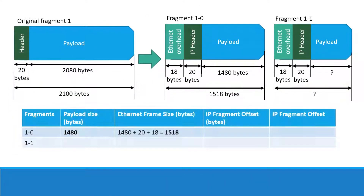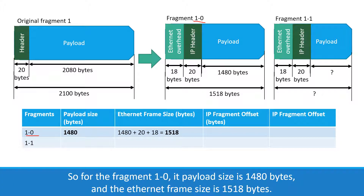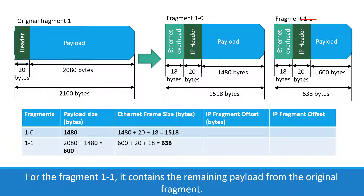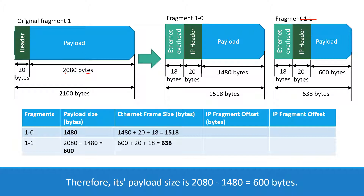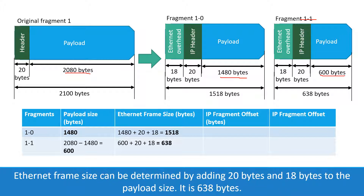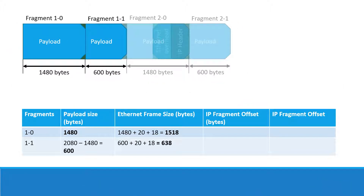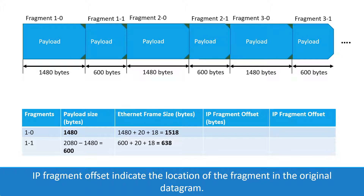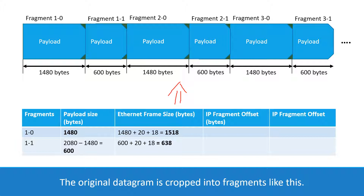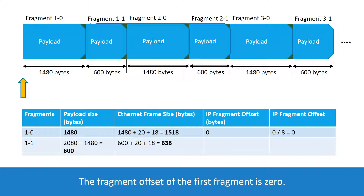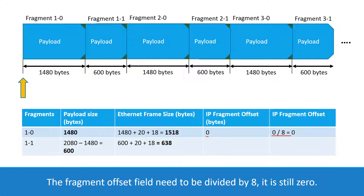For fragment 1.0, the payload size is 1480 bytes and the Ethernet frame size is 1518 bytes. For fragment 1.1, it contains the remaining payload from the original fragment. Its payload size is 2080 minus 1480 equals 600 bytes. The Ethernet frame size is determined by adding 20 bytes and 18 bytes to the payload, giving 638 bytes. The IP fragment offset indicates the location of the fragment in the original datagram. The fragment offset of the first fragment is 0 divided by 8, which is still 0.